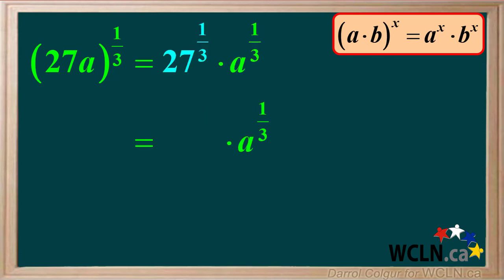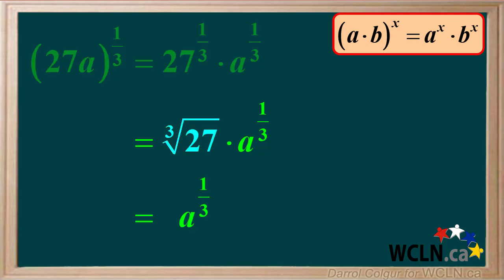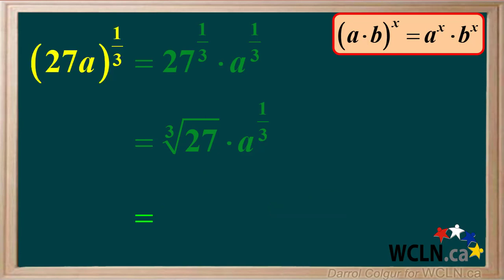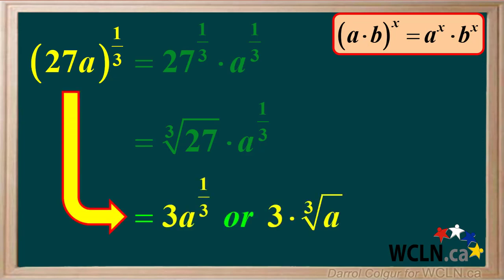27 to the 1 third is the same as the cube root of 27. The cube root of 27 is equal to 3. So the answer is 3 times a to the power of 1 third, or 3 times the cube root of a. So we can say that 27a to the power of 1 third is equal to 3 times a to the power of 1 third, or 3 times the cube root of a.